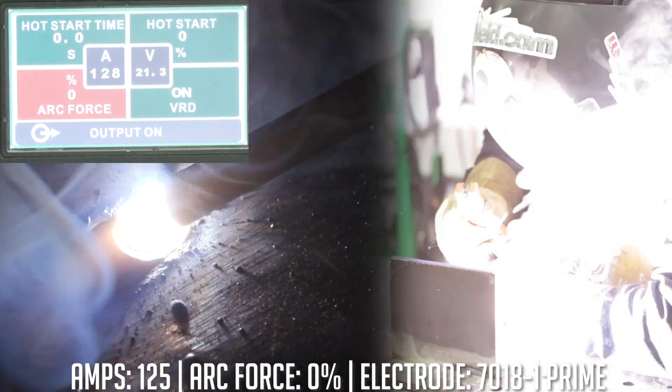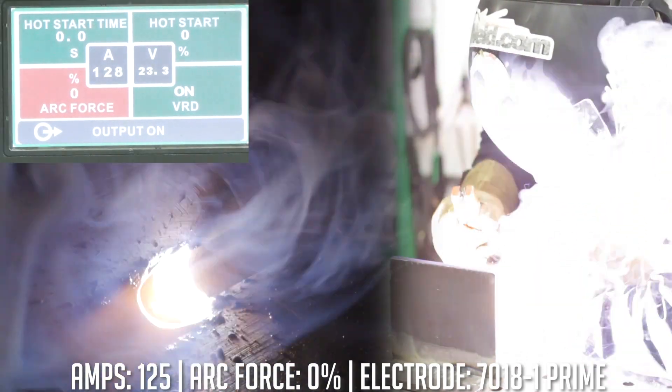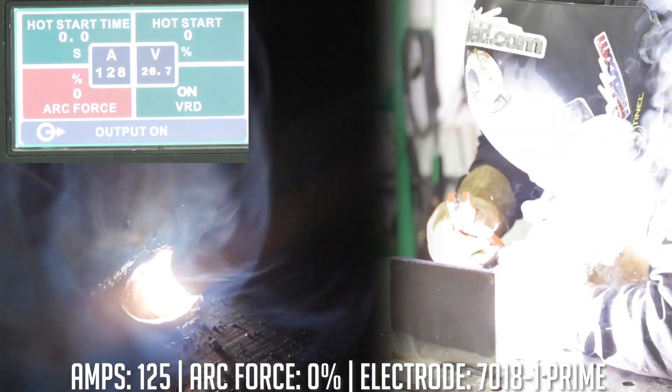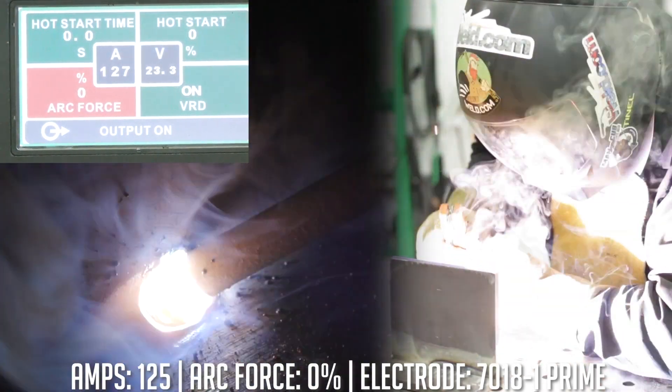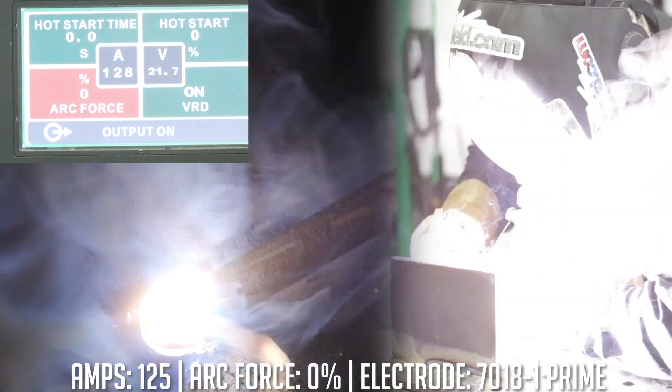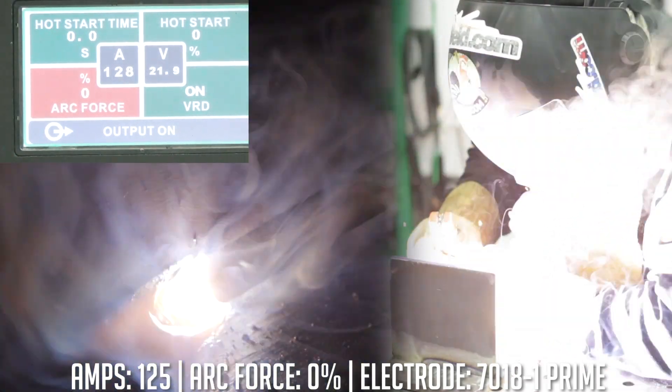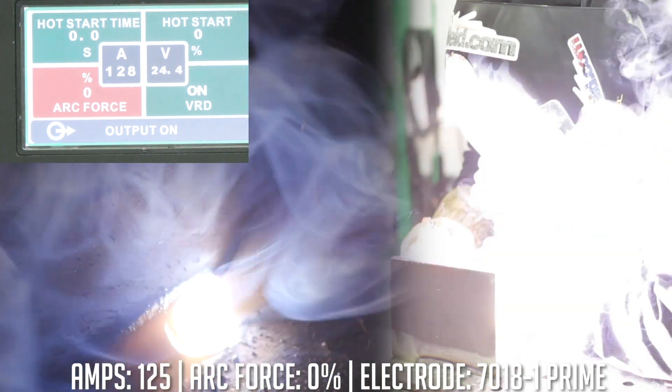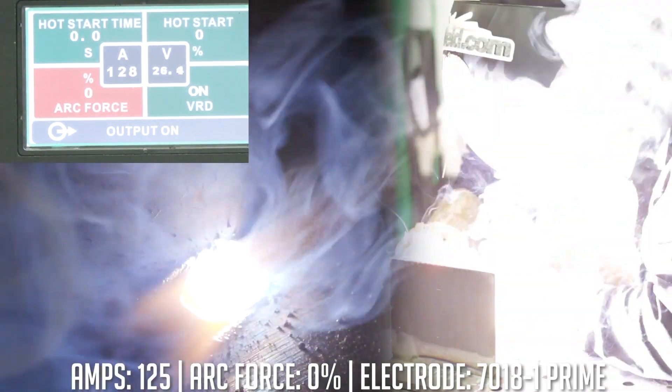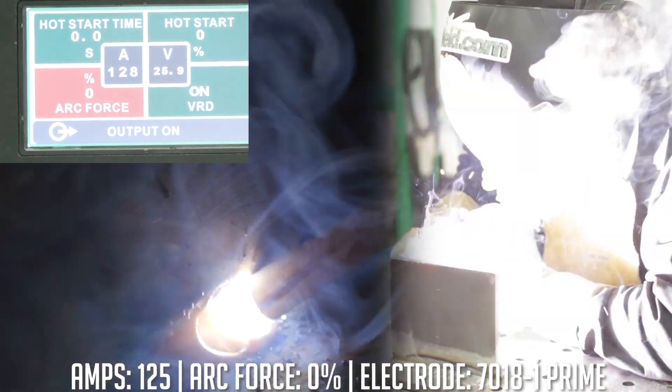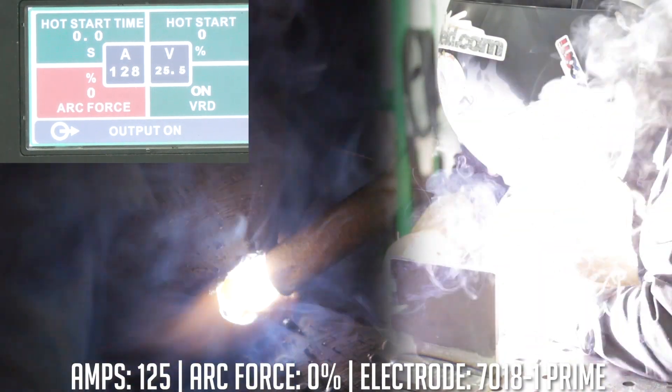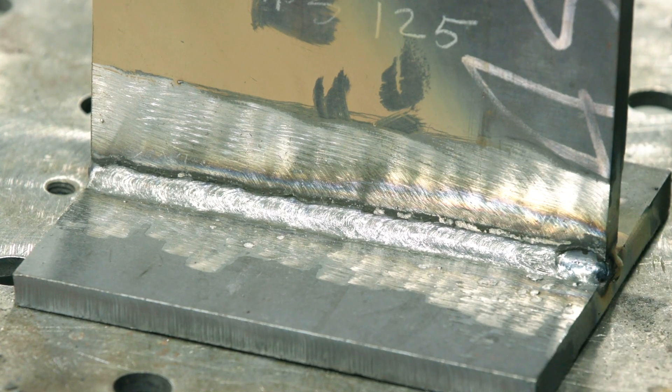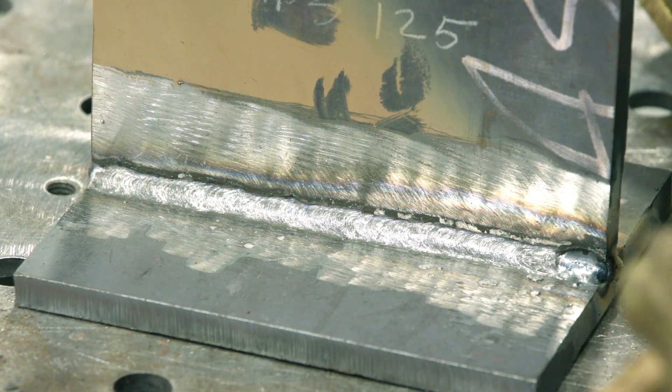The rod's running really smooth. We're using these new Weso 7018-1 Prime in the backpack, really smooth running rod. Seems to move a little bit faster than a typical 7018. So far man, these are nice. I'm liking this. And we'll terminate right here. Check it out, turned out pretty good. Good arc initiation, smooth bead profile, didn't have to fight the rod at all to keep it lit. Performed really well.